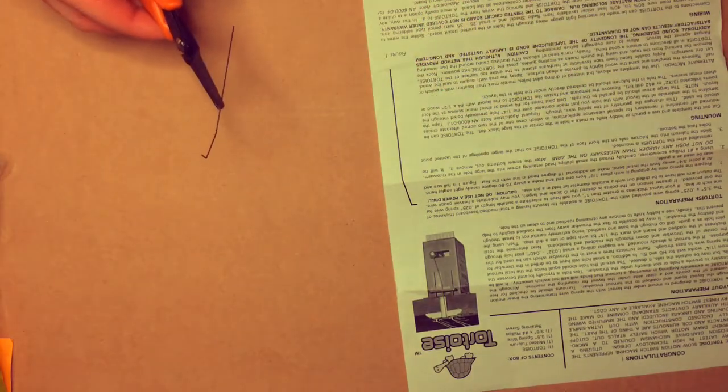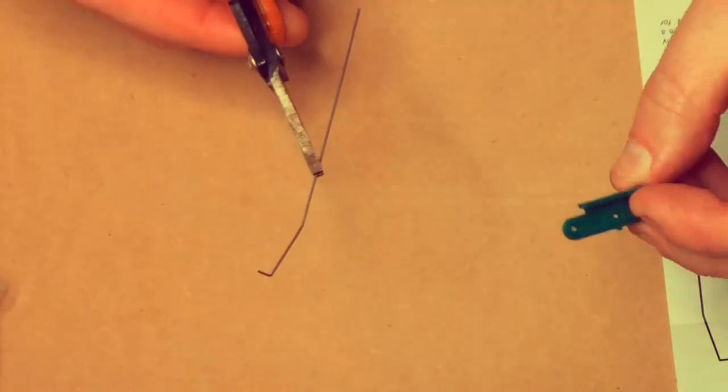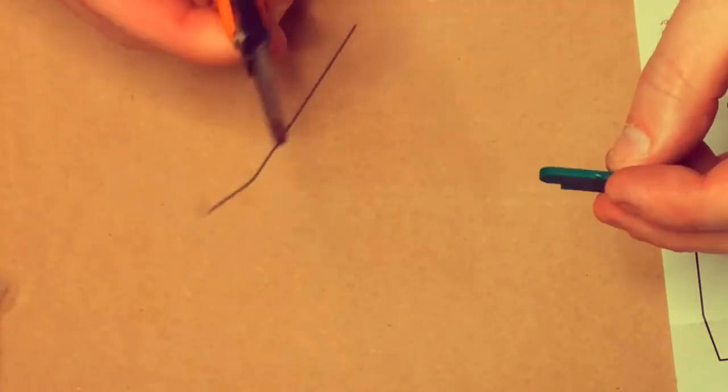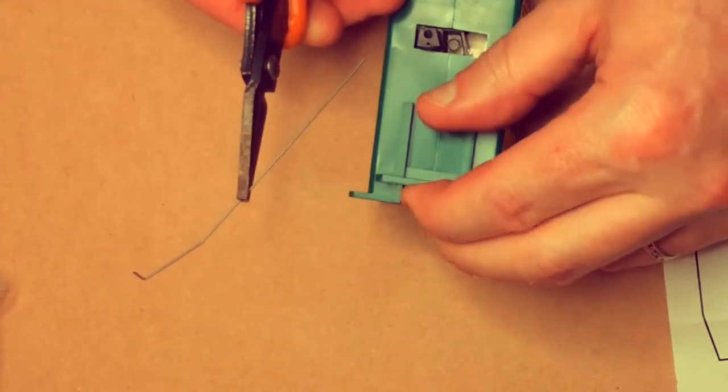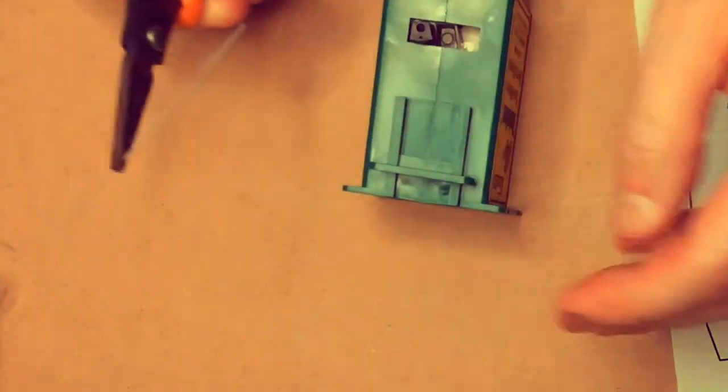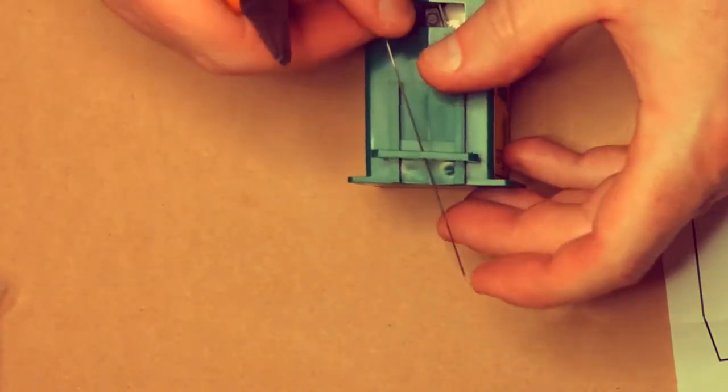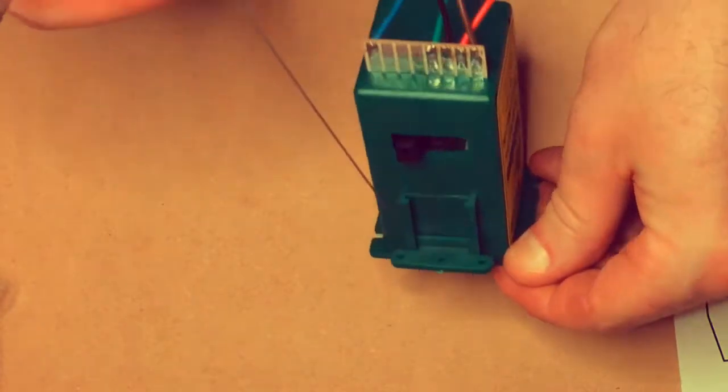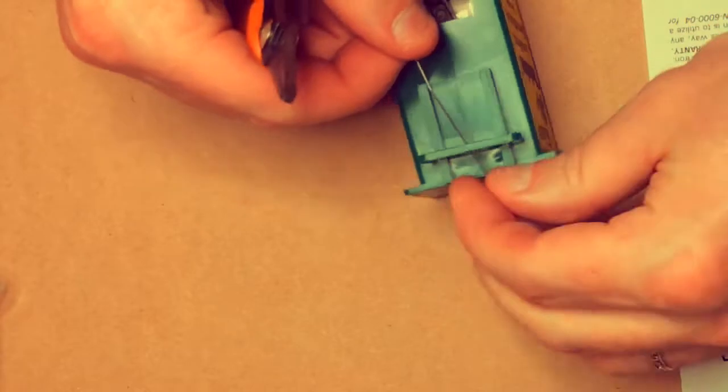So what we'll do is we get our fulcrum, which is basically the pivot point. We get our Tortoise motor, we slot our fulcrum—I just leave it sort of about that sort of position, we'll adjust it fine once it's installed on the layout if we need to. Then I thread, if you can see the hole in the middle, I thread the wire up the hole in the middle.